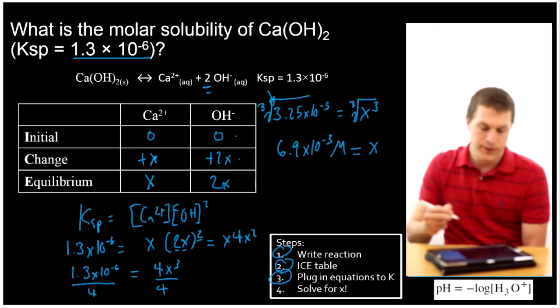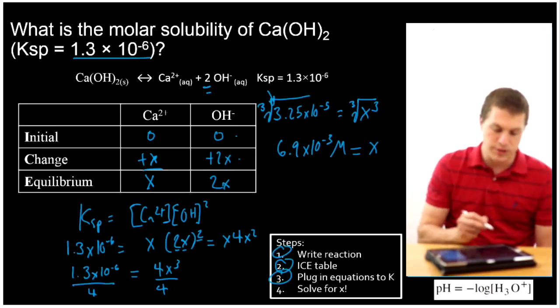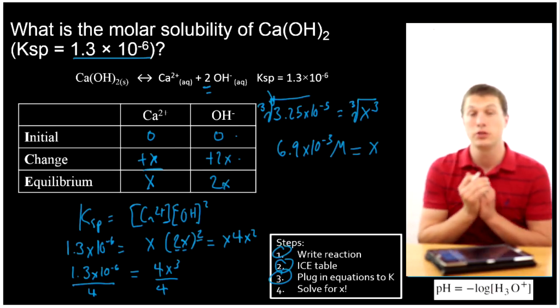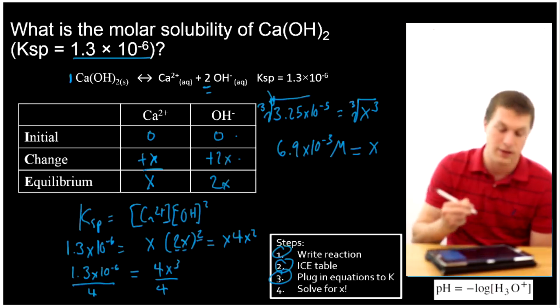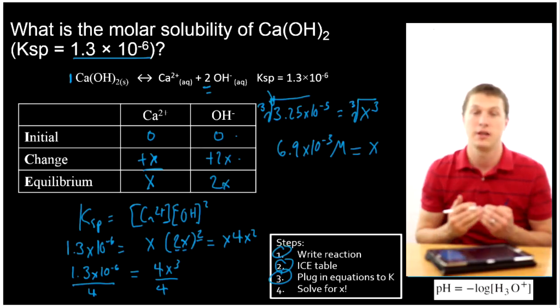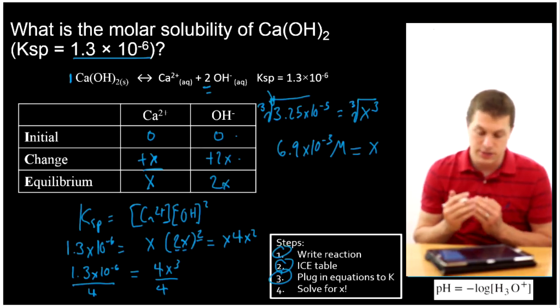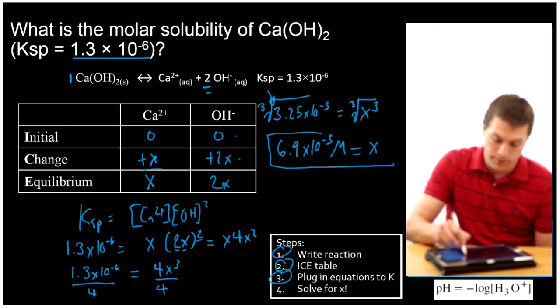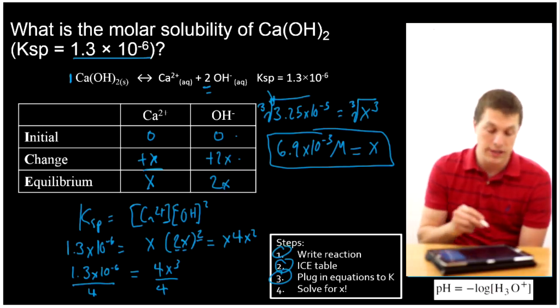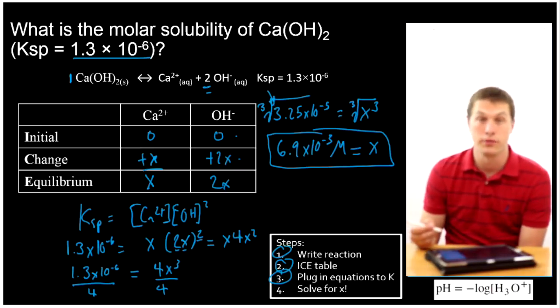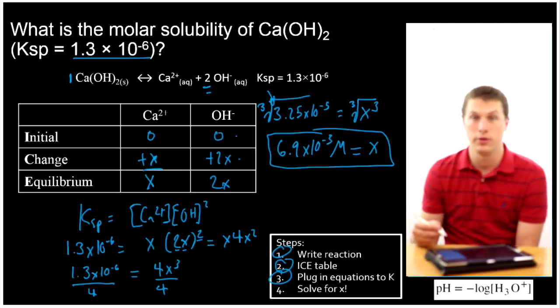So what I'll find is that 6.9 times 10 to the minus 3 is equal to X. And that's in molarity. Remember, that's what my X represents. That's how much I increased my calcium by. And similarly, there's a 1 in front of my calcium hydroxide. So that's how much my calcium hydroxide dropped by. So that's actually the answer to my molar solubility. 6.9 times 10 to the minus 3 moles per liter of calcium hydroxide can be dissolved. So once you solve for X for these problems, you've solved for the molar solubility. Let's do one more.